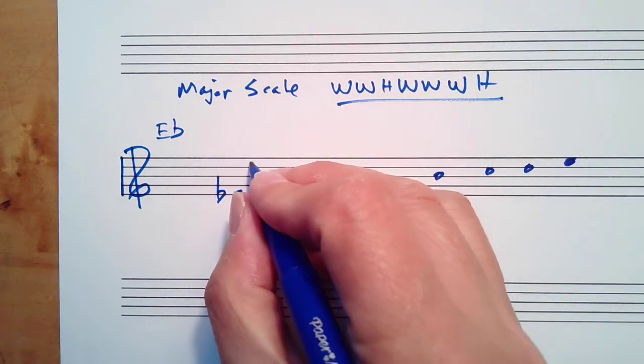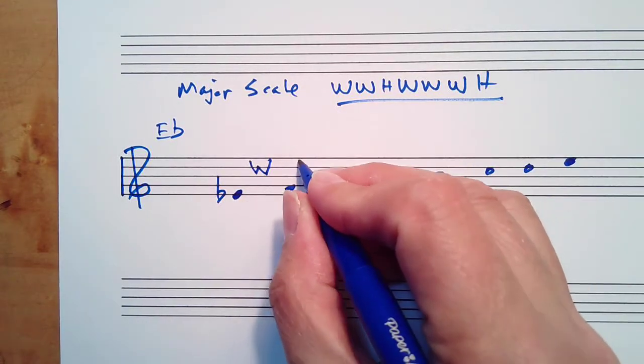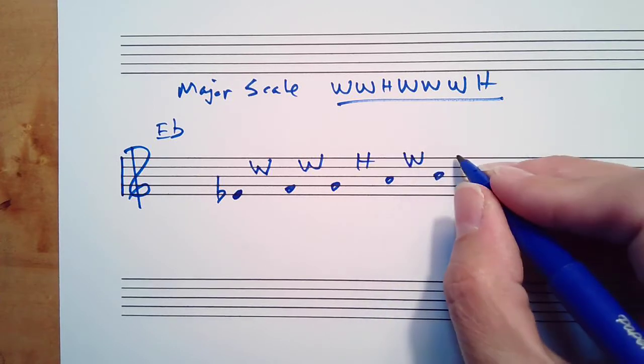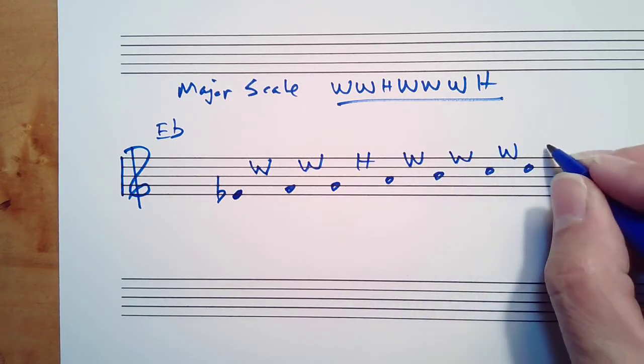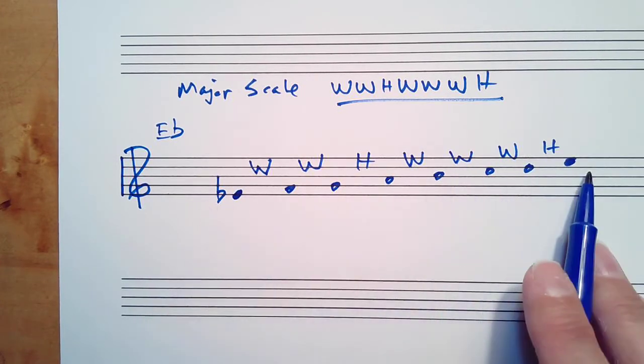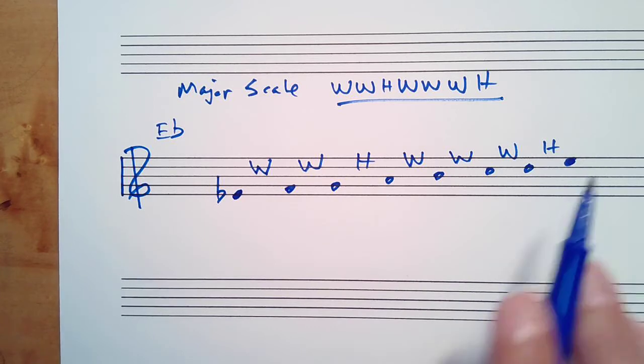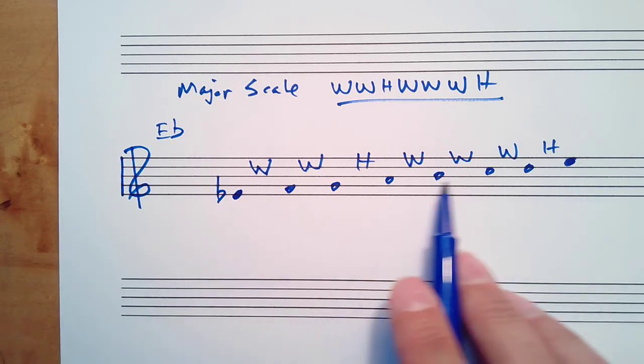Now we're going to take this pattern whole whole half whole whole whole half and write them between the notes. Now we will add accidentals to these pitches to make the scale conform to the pattern of whole steps and half steps.